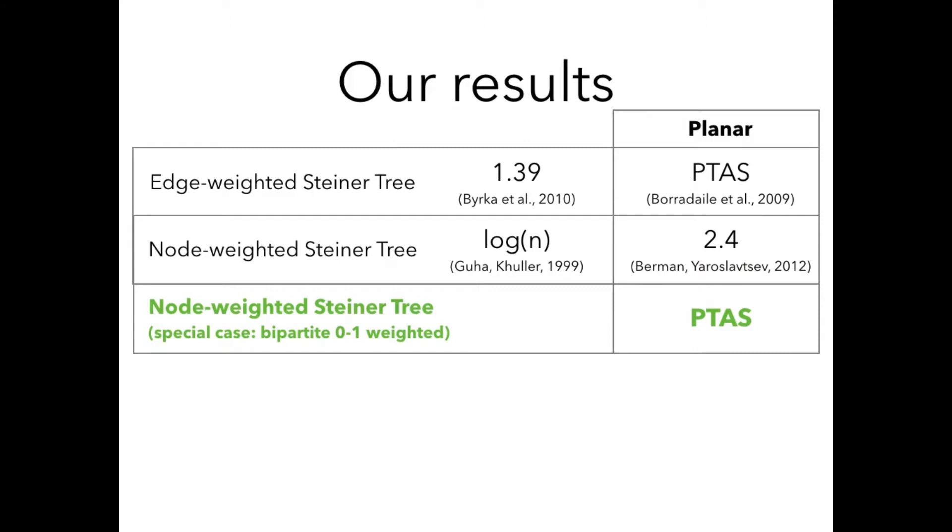However, we failed. On the other hand, we are able to show a PTAS for a special case of the node-weighted Steiner tree problem on planar graphs. The special case is that we have a bipartite graph with weights on the left 0, weights on the right 1, and the terminals are allowed to be only on the left side. Also, because the special case is weird, as a corollary, we are able to show a PTAS for Steiner tree on uniform map graphs.